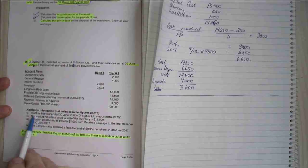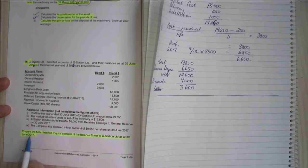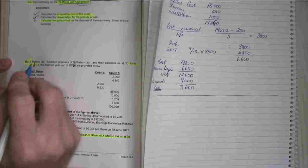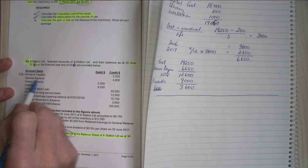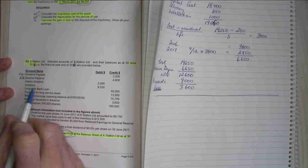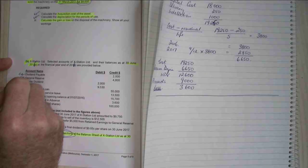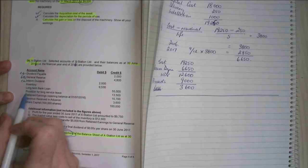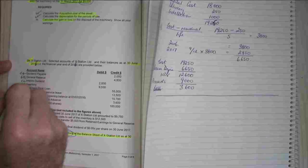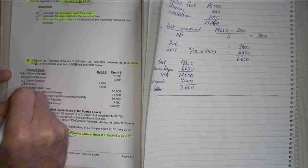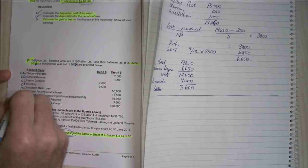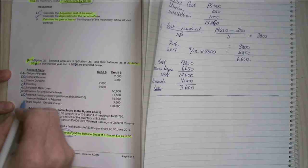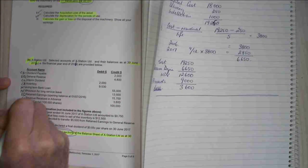So what I now need to look at is what have we got here. We've got a few bits of additional information. So what I'm looking for is what's my equity accounts? So let's have a look. Dividend payable, well that's a liability account, that's a current liability. My general reserve, that's part of equity. My interim dividend is a payable, so that'll be current liability. Inventory is a current asset, long term bank loan is a non-current liability. Provision for long service leave is a non-current liability. My retained earnings is equity. Revenue received in advance is a current liability, and my share capital is also equity.